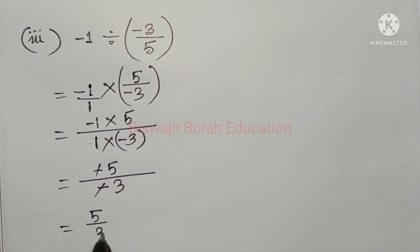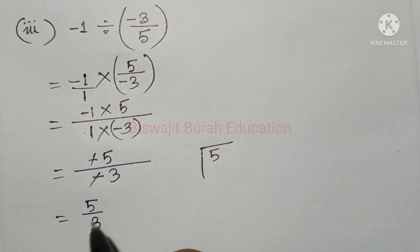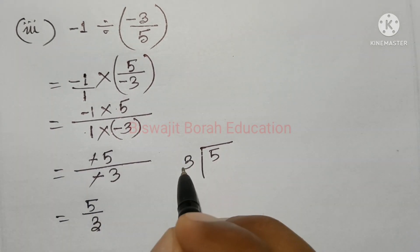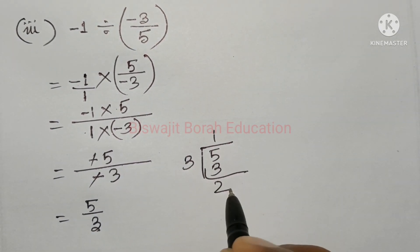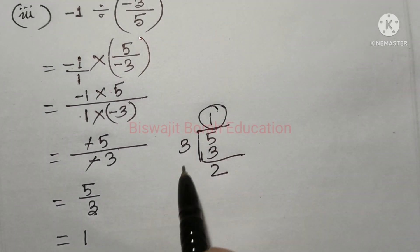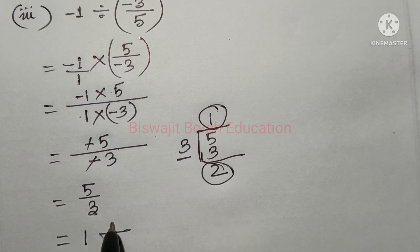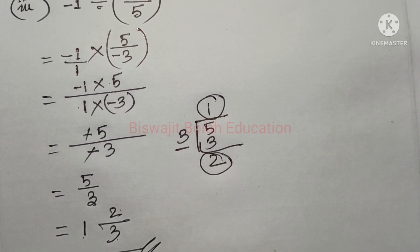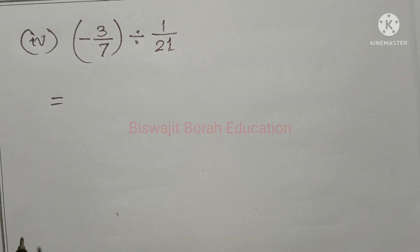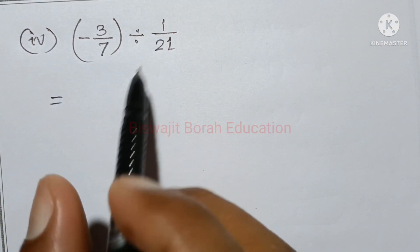I am going to divide 5 by 3, so I am going to divide 5 by 3. So I am going to divide 3 by 2. So I am going to divide 2 by 3. And this is the 2-3. So I am going to divide 2 by 3 by 2. This is the result and we have to divide.